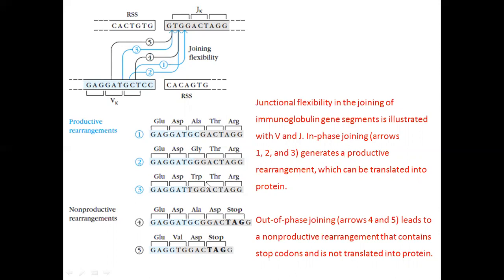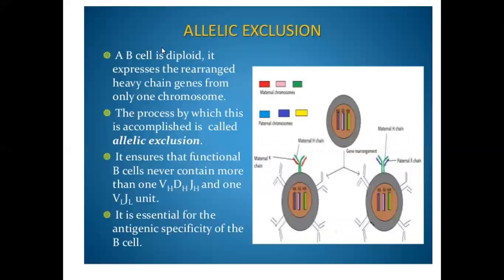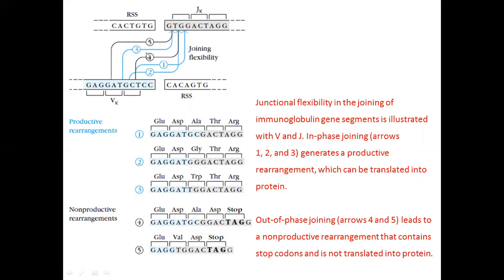The complete proteins you get are codons 1, 2, and 3 — the blue colored one. If it is out-of-frame, that 4 and 5 joining leads to non-productive rearrangement that contains stop codons. This one contains stop codons and is not translated into protein.